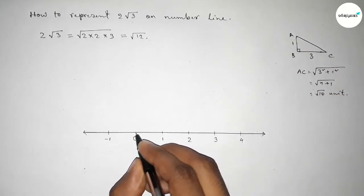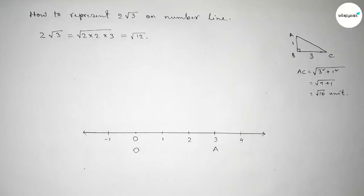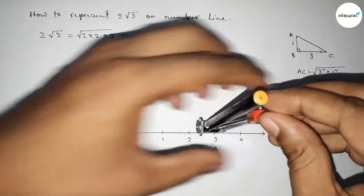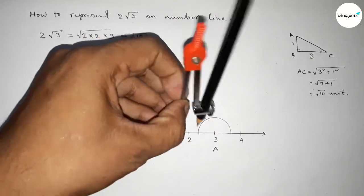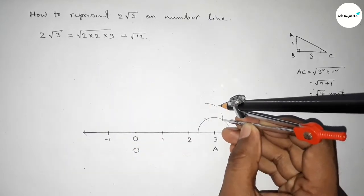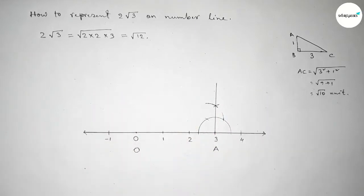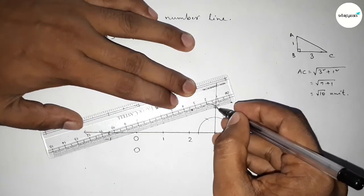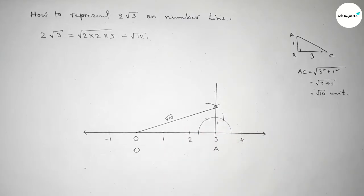First we apply this concept between 0 and 3, taking point O and point A. We draw a 90-degree angle at point A using compass — placing the compass, taking any length, drawing arcs, cutting at intersections — and joining the line to get a 90-degree angle. Taking a length of 1 unit and cutting, this gives us the hypotenuse equal to √10 units.